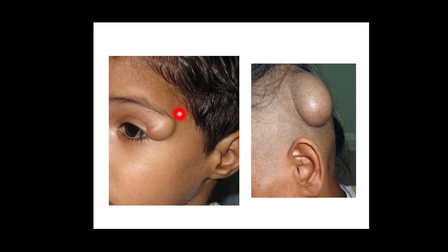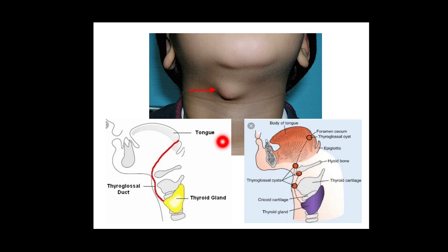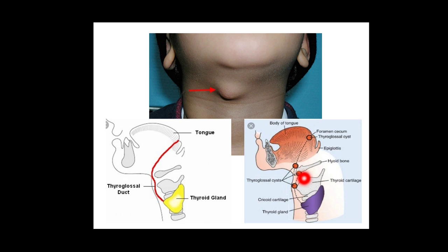This here is a sequestration dermoid — this particular one is an external angular dermoid. This is another sequestration dermoid in the scalp, in the line of fusion of the scalp bones. This is a tubulo-dermoid cyst, otherwise known as a thyroglossal cyst. You can see the midline swelling and the thyroglossal tract. A patent part can occur at any of these locations; the most common is a sub-hyoid location. This will be dealt with in detail in another topic.